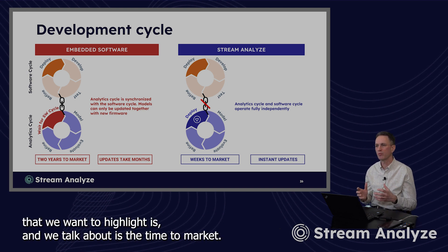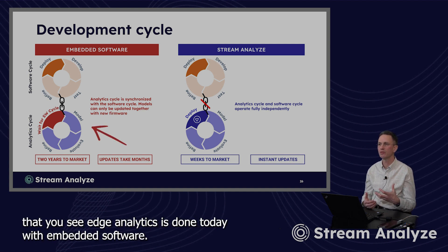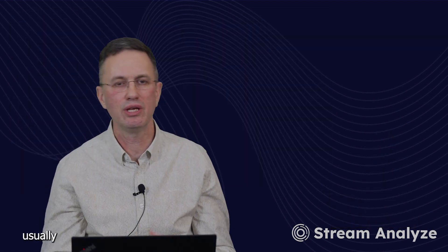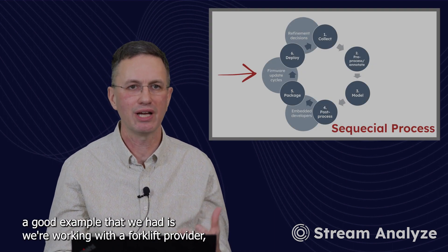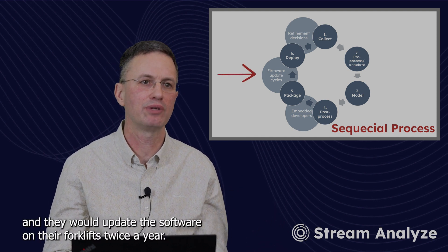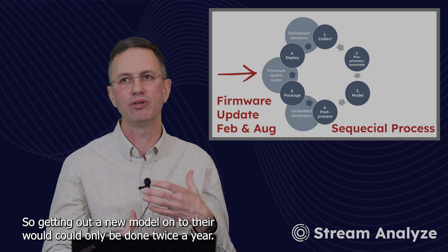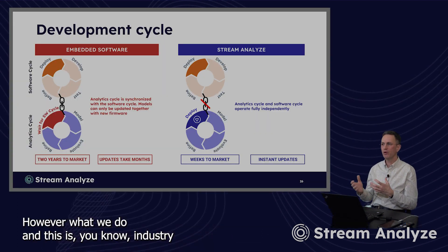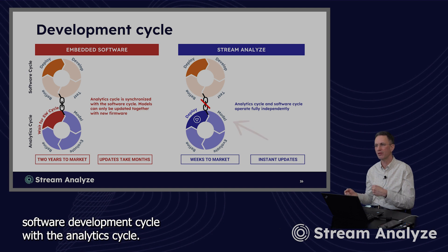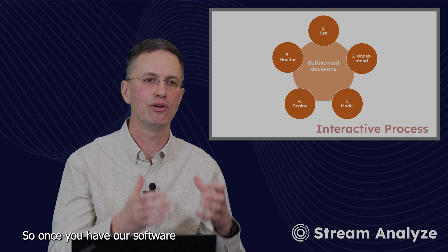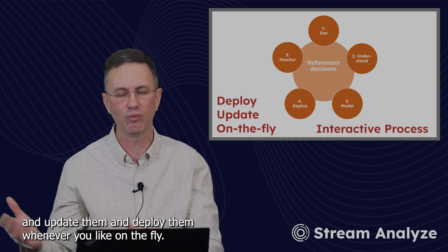One of the unique things here that we want to highlight is the time to market. What we see on the left is the normal way that edge analytics is done today with embedded software — usually new models you want to deploy will follow the normal software cycle. A good example is we're working with a forklift provider and they would update the software on their forklifts twice a year, in February and in August. So getting out a new model onto there could only be done twice a year. However, what we do — and this is the industry advantage on the right — is we untether that software development cycle from the analytics cycle. So once you have our software deployed directly on your devices, now you can build models and update them and deploy them whenever you like, on the fly.